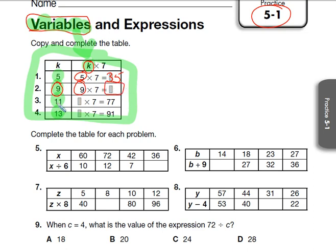In number three, they're saying that k equals 11, so we're going to take that 11, plug it in for k, and we get 11 times 7 equals 77. Go ahead and do number four on your own. I'm going to do number five and let you do the rest of them on your own.